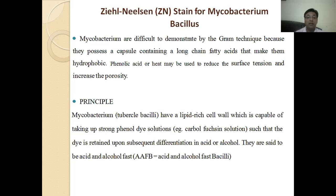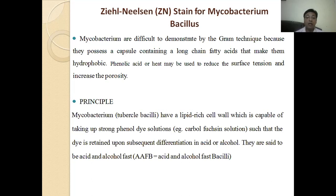In the Ziehl-Neelsen staining method, Mycobacteria have a lipid-rich cell wall which is capable of taking up a strong phenol dye — basically carbol fuchsin — such that the dye is retained upon subsequent differentiation in acid or alcohol. They are said to be acid and alcohol fast.